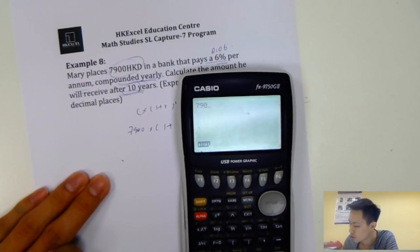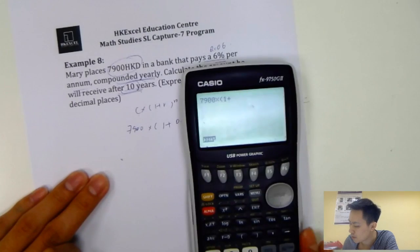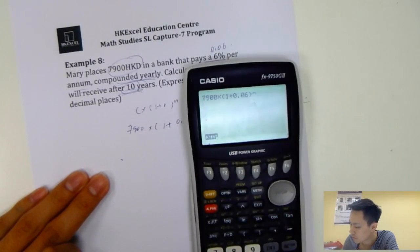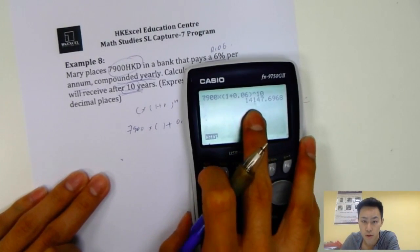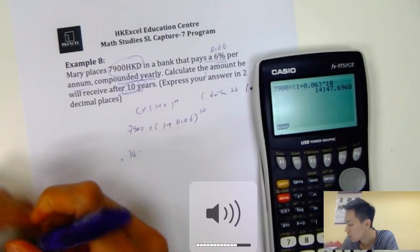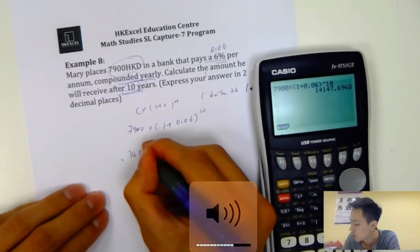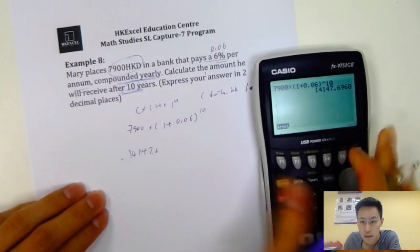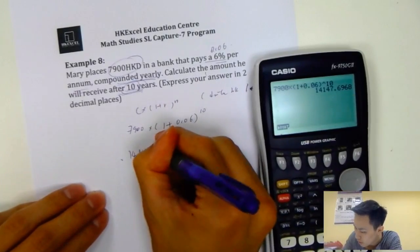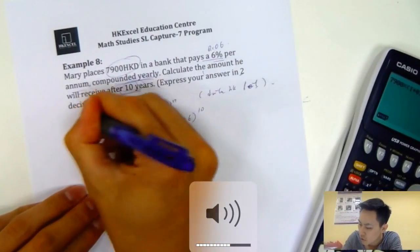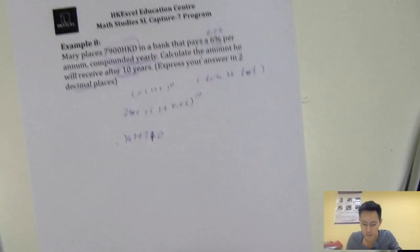Then you just plug it in your GDC. 1 plus 0.06 power of 10. So it's 14,176.96. You round it up to 14,170 because 2 decimal places. That's the first type.